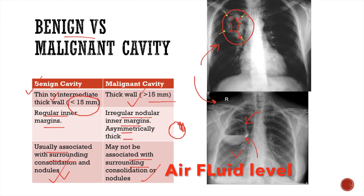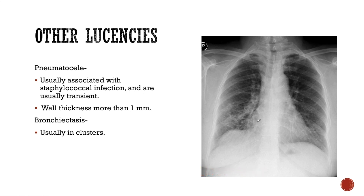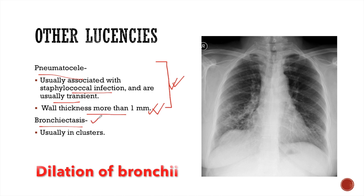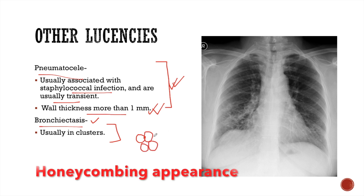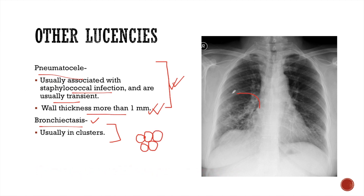There is also an air-fluid level within the cavity, which suggests this benign cavity lesion is an abscess. There may be other lucencies on an X-ray as well — those are pneumatoceles and bronchiectasis. Pneumatoceles are usually associated with staphylococcal infection and are usually transient, with wall thickness of more than 1 mm. It may be very difficult to differentiate pneumatoceles from a benign cavity lesion. Bronchiectasis is characterized by dilatation of the bronchi, usually occurring in clusters, creating multiple lucencies that form a clustered honeycomb appearance on X-ray. For example, in this X-ray we can see multiple lucencies clustered together forming a honeycomb appearance — this is a case of right middle lobe bronchiectasis.